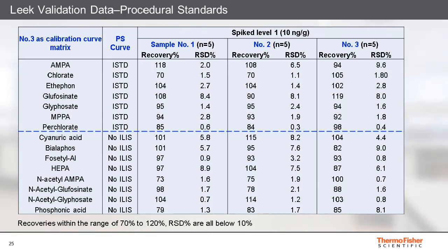Leek, a vegetable crop, proved to be a much easier matrix compared to wheat and gave good data irrespective of the calibration approach. Using procedural calibration standards, all recoveries were in the range 70 to 120 percent and all RSDs were below 10 percent.